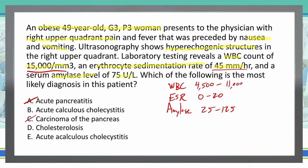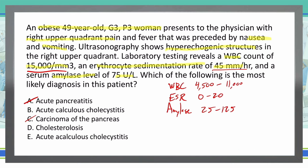Acute calculous cholecystitis with gallstones seems a possible answer. Cholesterolosis typically doesn't show inflammatory changes, so we wouldn't see an elevated ESR or elevated white blood cell count with cholesterolosis — so that's out. Acalculous cholecystitis means an absence of gallstones, but the ultrasound shows hyperechoic structures consistent with gallstones, so we are not dealing with acalculous cholecystitis.